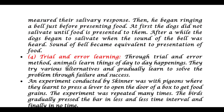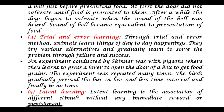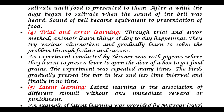Next is trial and error learning. Through trial and error, animals learn things from day-to-day happenings. They try various alternatives and gradually learn to solve problems through failure and success. An experiment conducted by Skinner used pigeons, where they learned to press a lever to open the door of a box to get food. The experiment was repeated many times, and the birds gradually pressed the bar in less and less time.